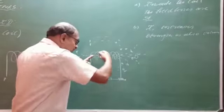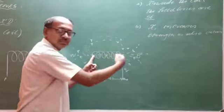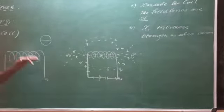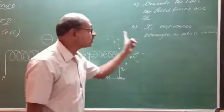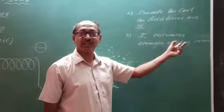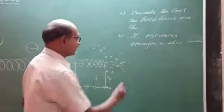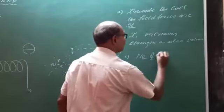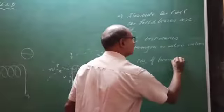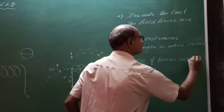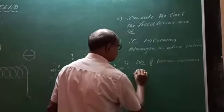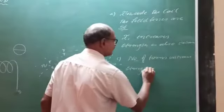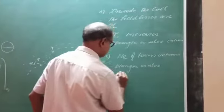And if the number of turns in a cylindrical coil or in a solenoid increases, then also the strength of the magnetic field increases. So as the number of turns increases, the strength is also increases.